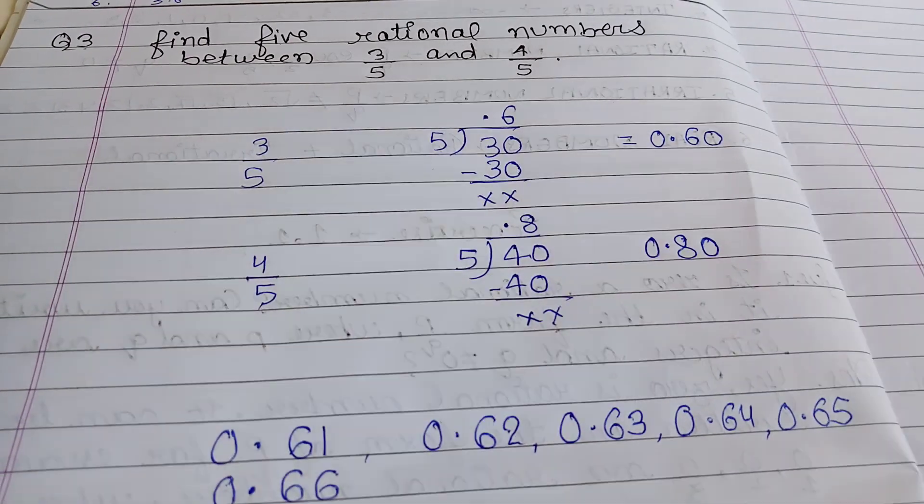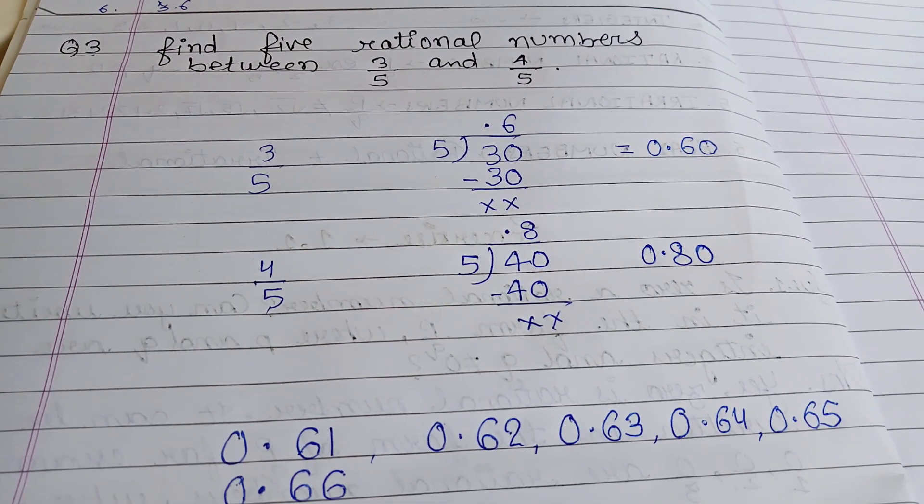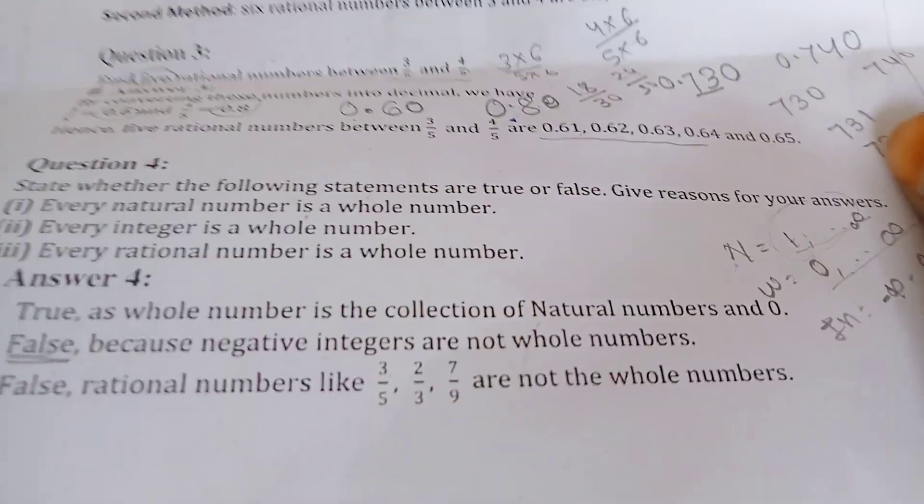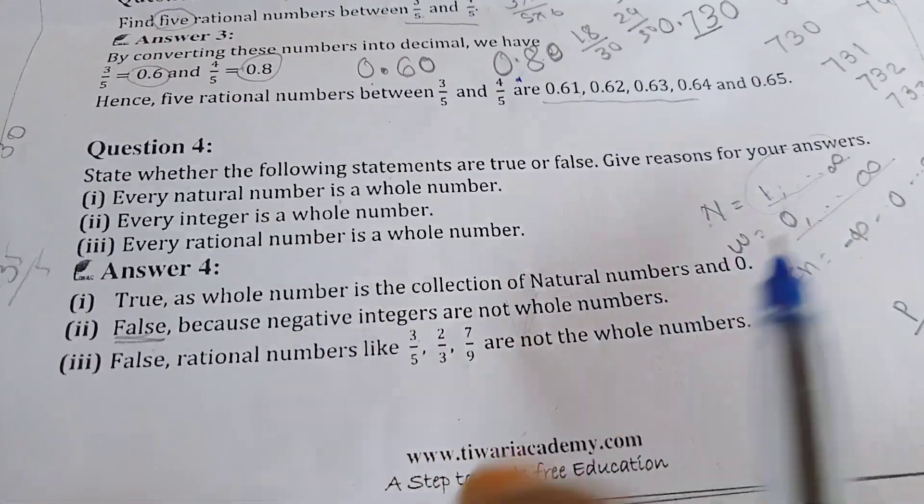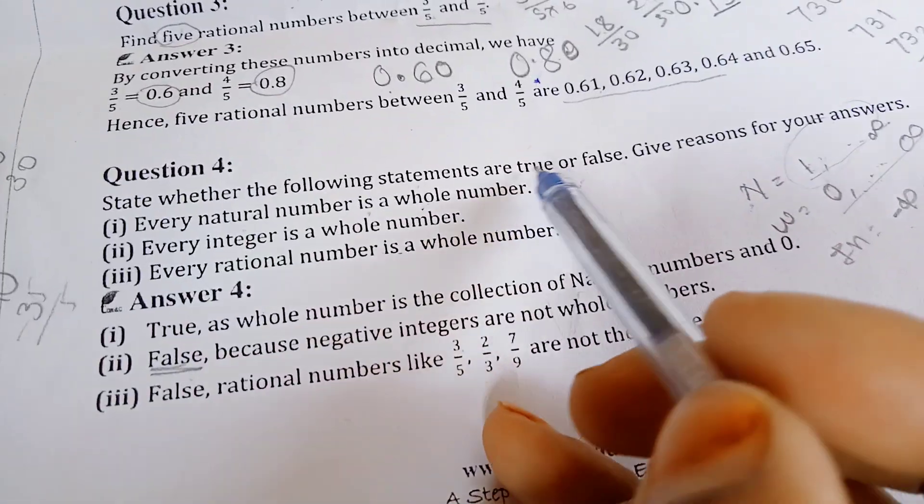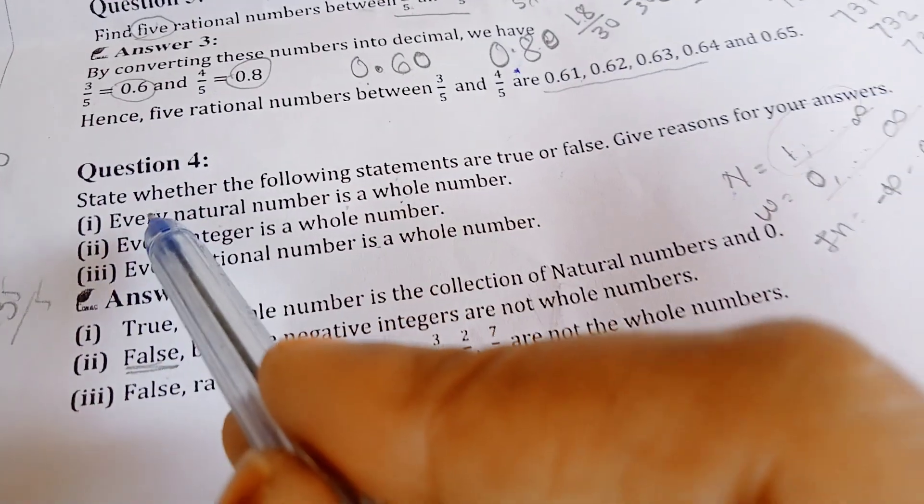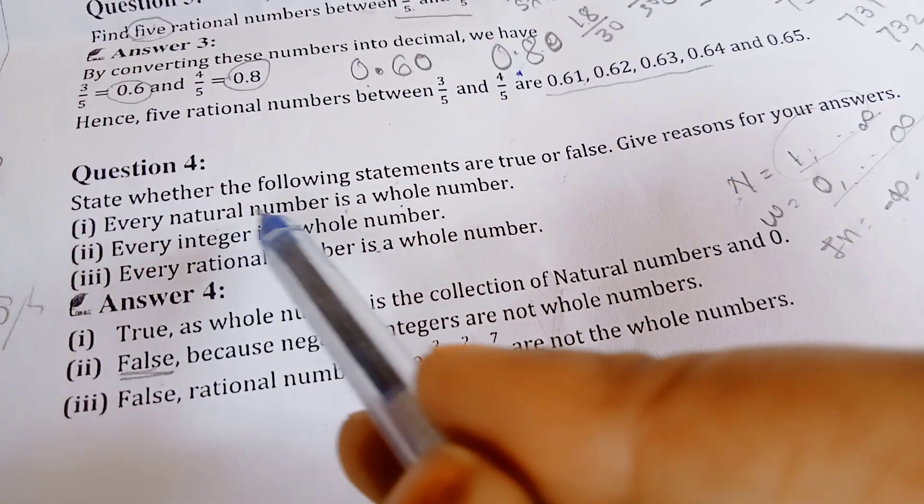Your next question is question number 4, which we don't have to solve. This is an oral question. You have to answer based on the definitions that you learned in the first video. We have to answer true-false. In question number 4, the first statement is: every natural number is a whole number.